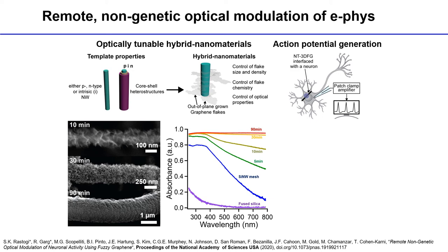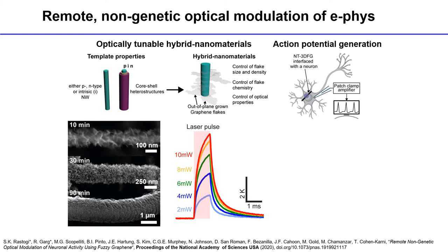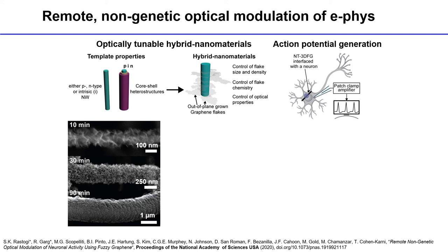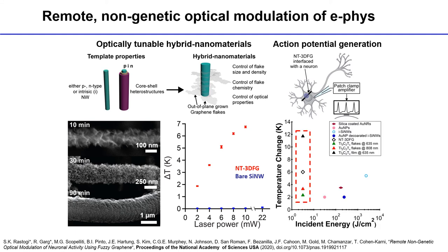Unlike pristine graphene, our materials are opaque — close to black in color. A 90-minute growth time generates close to 97% absorbance. Shining laser pulses on these materials generates a temperature increase; we can generate up to 7 Kelvin with 10 milliwatts of laser power, whereas bare silicon nanowires increase by less than half a Kelvin. A MXene version of these fuzzy wire structures is coming out soon in ACS Nano.